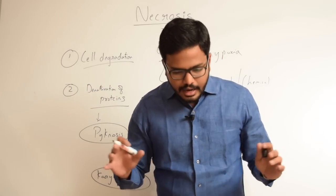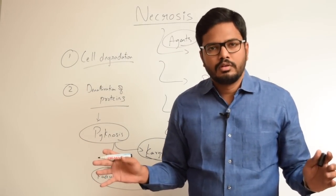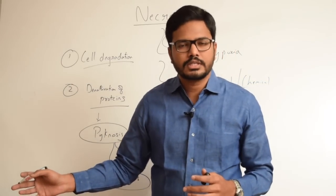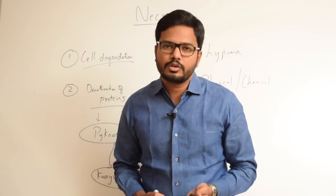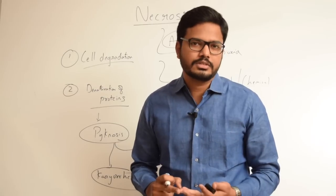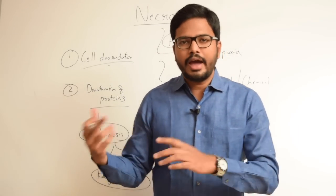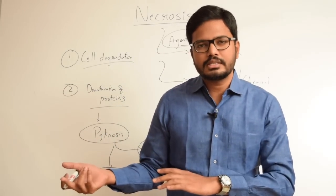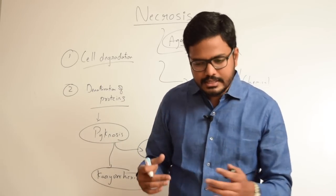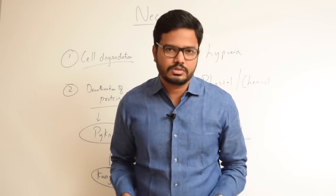We have different kinds of necrosis. Broadly there are around five types: coagulative necrosis, colliquative or liquefactive necrosis, caseous necrosis, fatty necrosis, and fibrinoid necrosis. Now let's discuss in detail regarding all these types of necrosis.